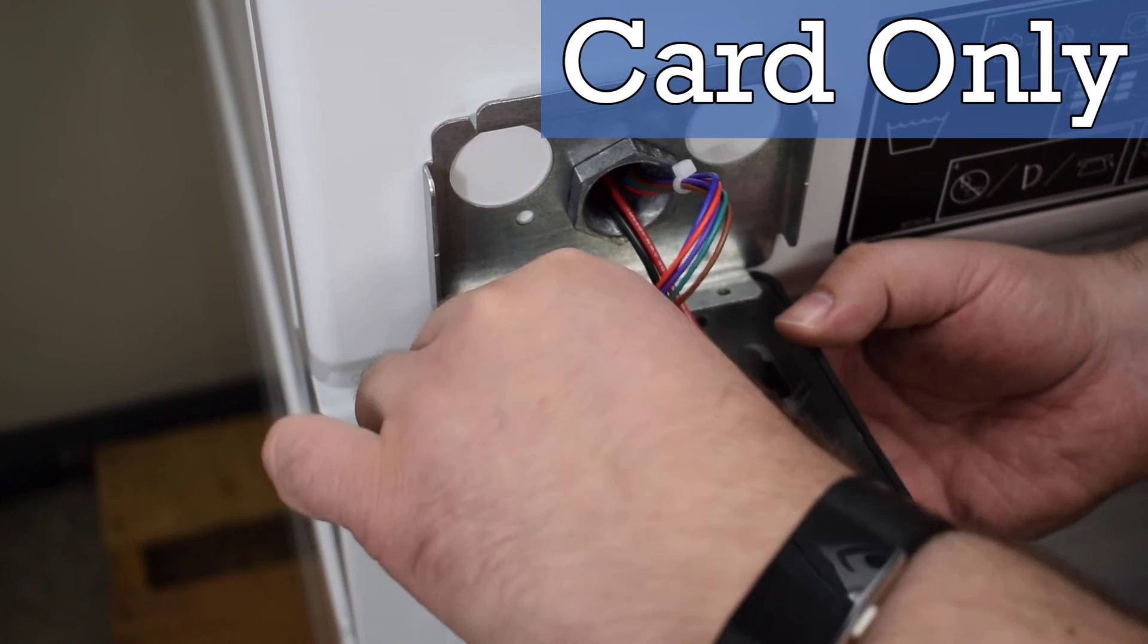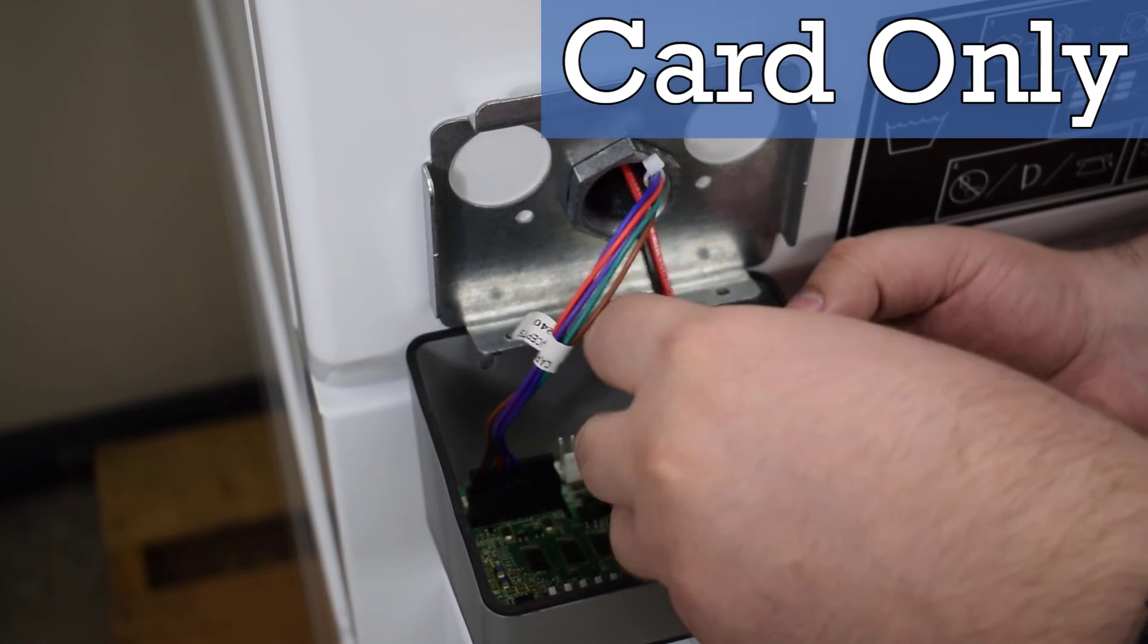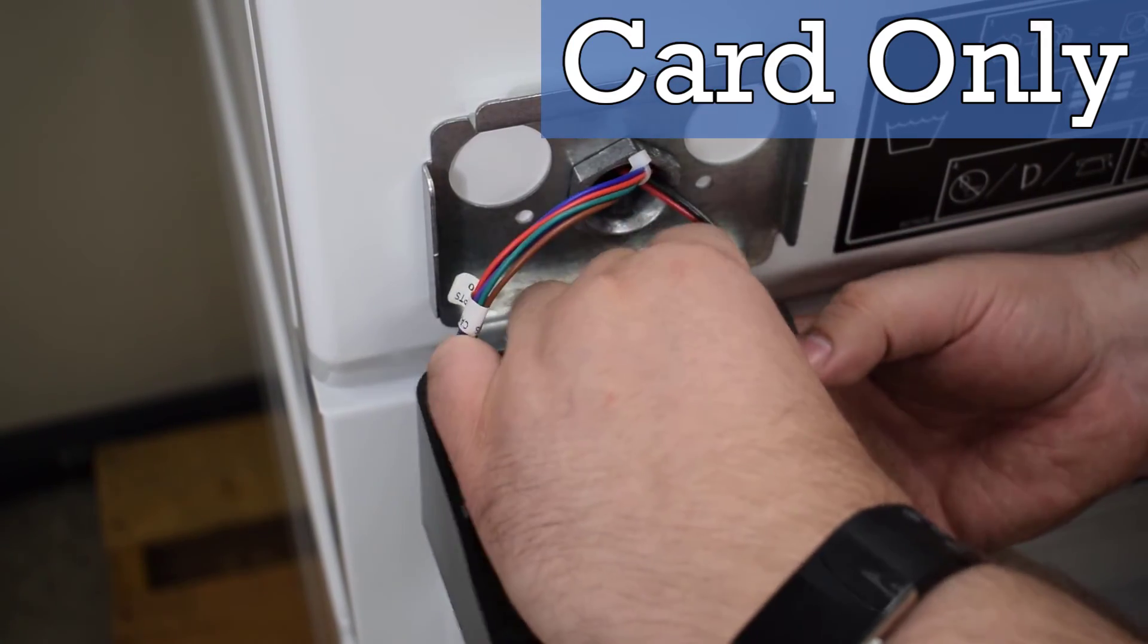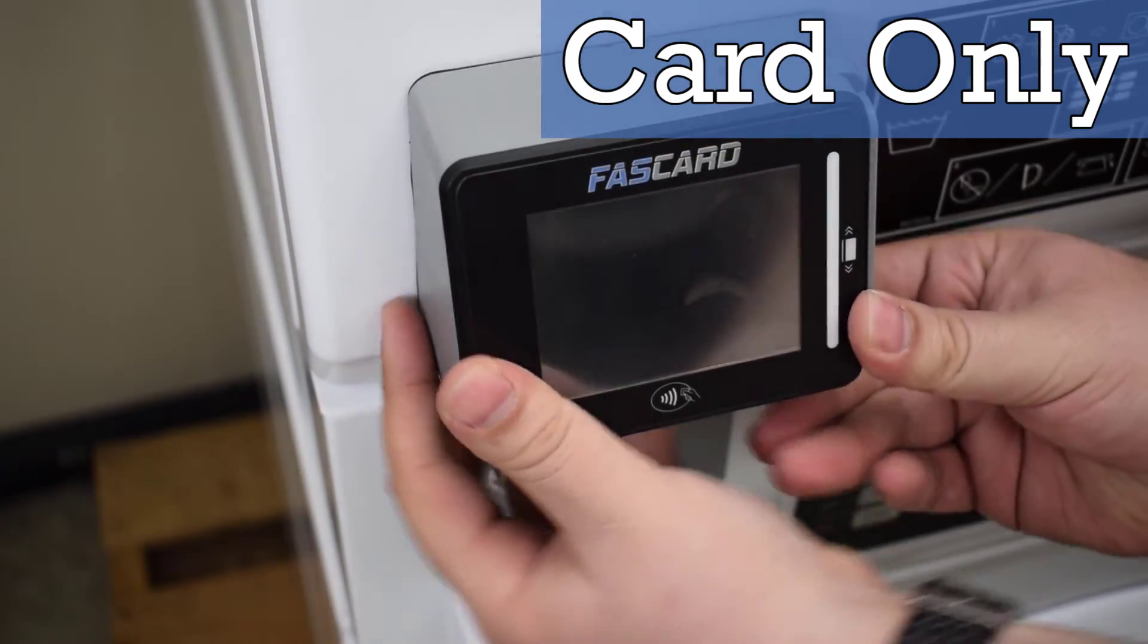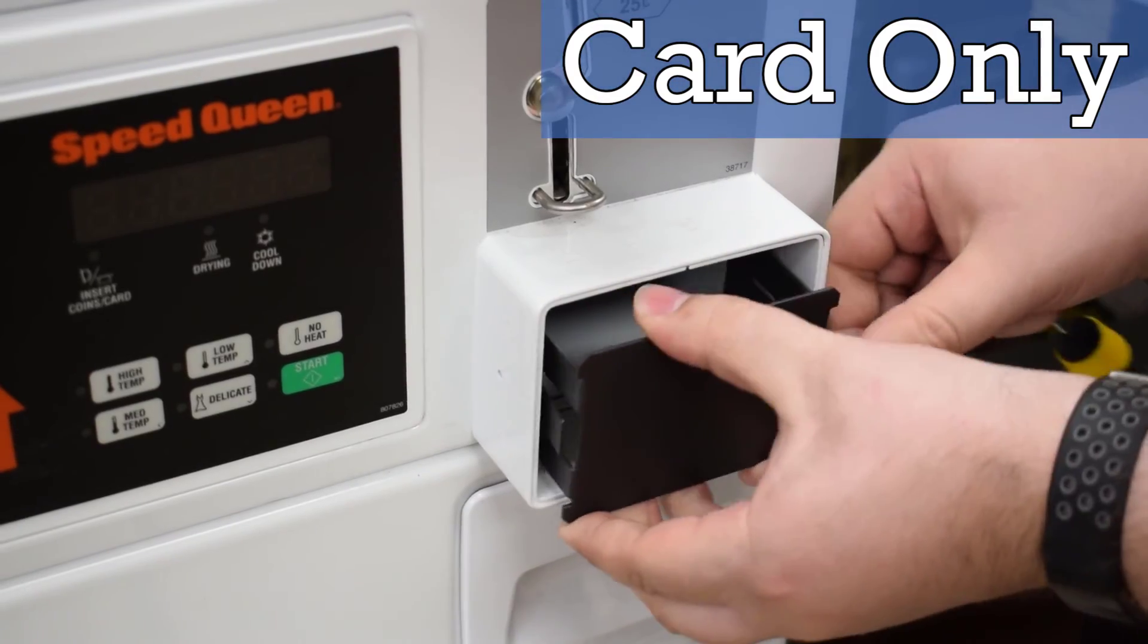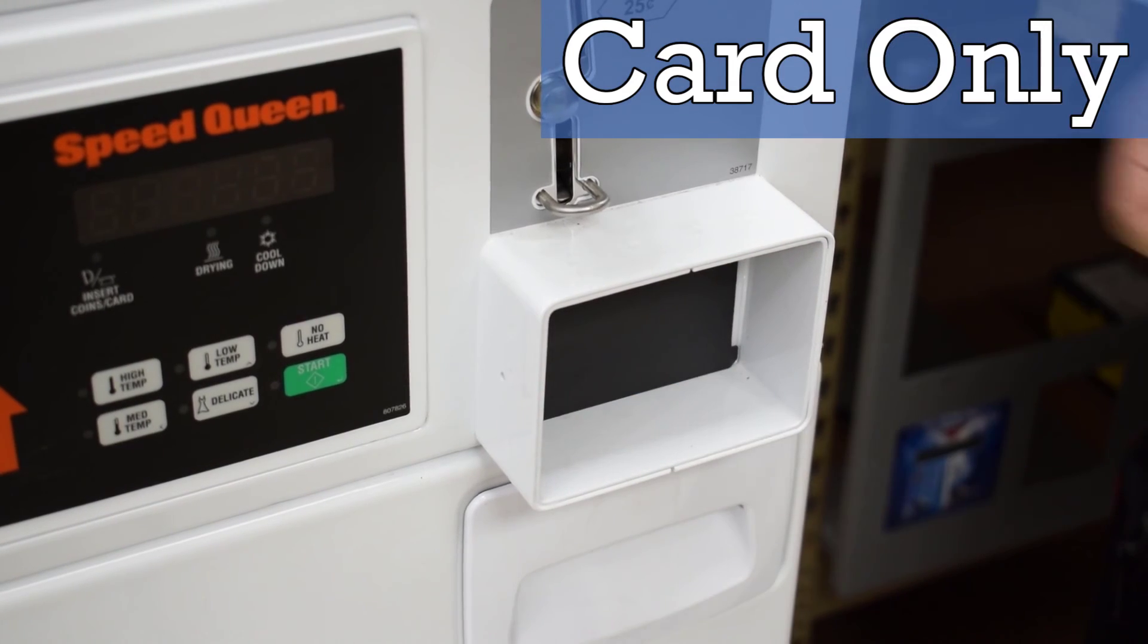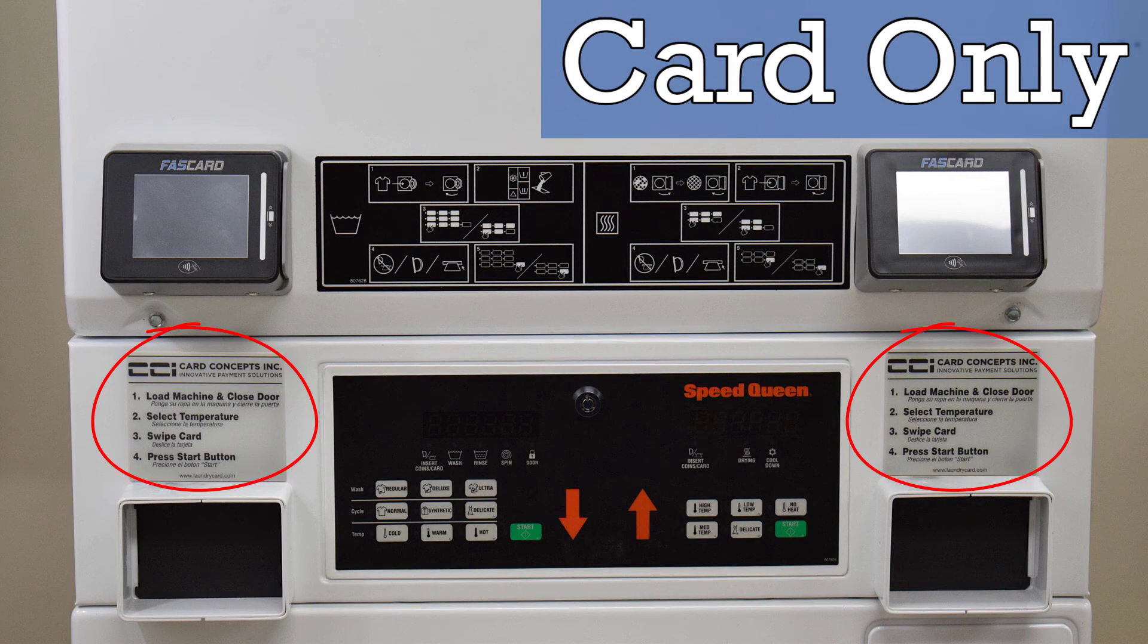Alternatively, for card-only solutions, you would only need to connect the serial and power harnesses to the reader. However, prior removal of the coin drop and coin vault would leave the below spaces open. Slide the CCI-provided coin vault cover into the coin vault slot until it locks into place and affix the coin vault cover label in place of the coin drop slot as shown.